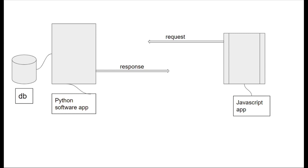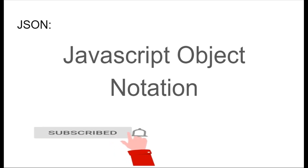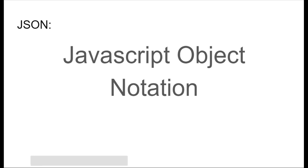In a normal HTTP request-response cycle, an HTML template is given back as a response, but in the case of an API, a JSON response is given back. JSON is a way to notate what an object looks like — it doesn't have to be done with JavaScript and is supported in almost every programming language. It's the standard for API data transfer, although some older APIs use XML.